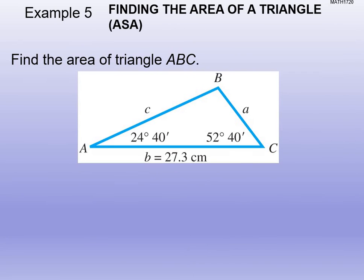Find the area of triangle ABC in this next example — it requires more work. We only have little b, so we need to find little a or little c first using the law of sines before we can apply the area formula. This is a two-step problem. Always pay attention to what's given versus what you're looking for to know if you have a multi-step problem.